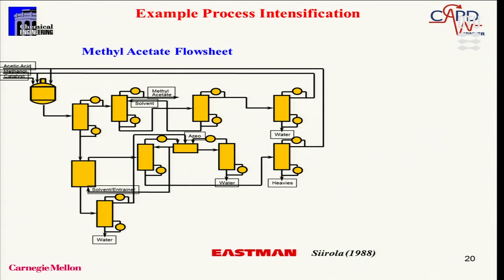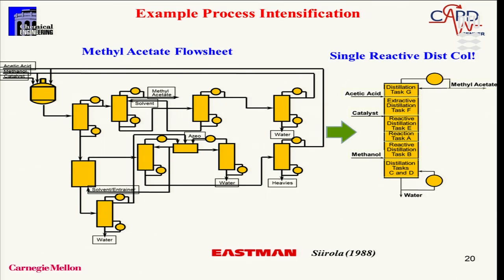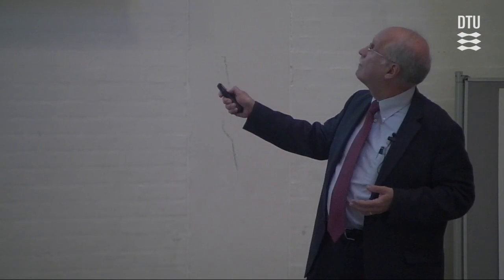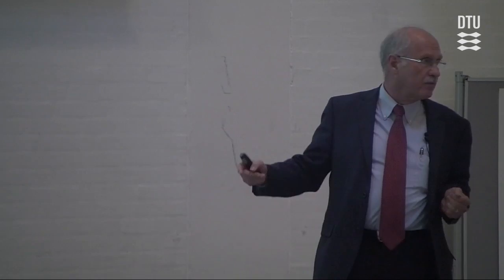Not everything is at the molecular level. One of the major challenges — also being addressed here at the center — is process intensification. A very nice example is work by Jeff Siirola at Eastman Chemical: for methyl acetate, they had one reaction and seven distillation columns in a complex flow sheet. The remarkable idea was that this entire complex process could be replaced by a single reactive distillation column, integrating all the tasks and reactions into one column. This had a tremendous impact in reducing investment and operating costs. The big open question is how to discover such solutions systematically.